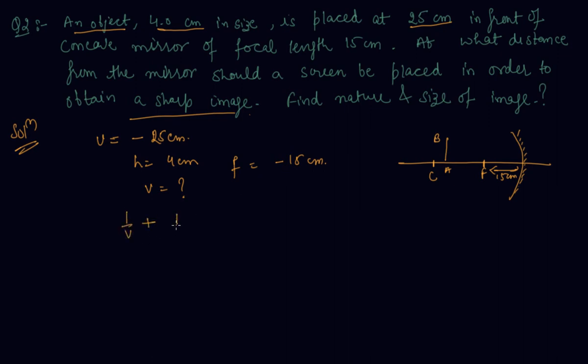We will use the mirror formula: 1 by V plus 1 by U equals 1 by F. This will be 1 by V equals minus 1 by 15 plus 1 by 25, so the value of V comes out to be negative 37.5 centimeters. The image will be formed beyond C.